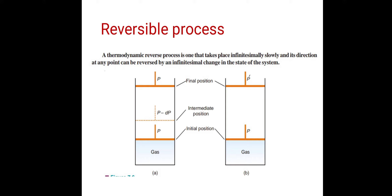The first part of the definition states that a thermodynamic reversible process takes place infinitesimally slowly — we are decreasing or increasing the pressure very slowly. The second part says its direction at any point can be reversed by an infinitesimal change in the state of the system. Infinitesimal change means a very small change. Both these processes are performed slowly, so this is a reversible process.